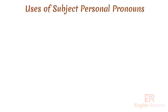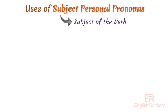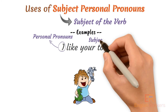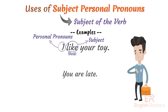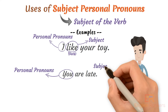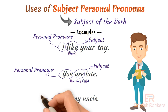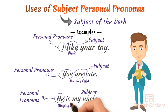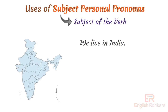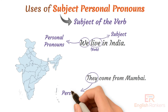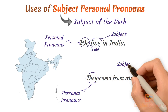We use subject personal pronouns as the subject of the verb. For example: 'I like your toy' — here 'I' is a personal pronoun acting as subject of the verb 'like'. 'You are late' — 'you' acts as subject of the helping verb 'are'. 'He is my uncle' — 'he' acts as subject of 'is'. 'We live in India' — 'we' acts as subject of 'live'. 'They come from Mumbai' — 'they' acts as subject of 'come'.